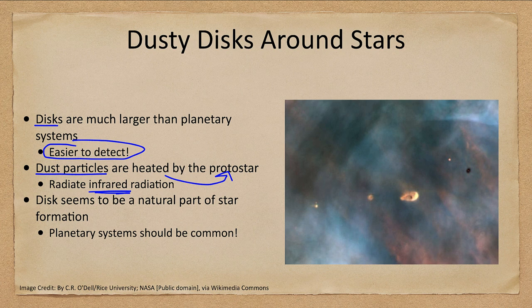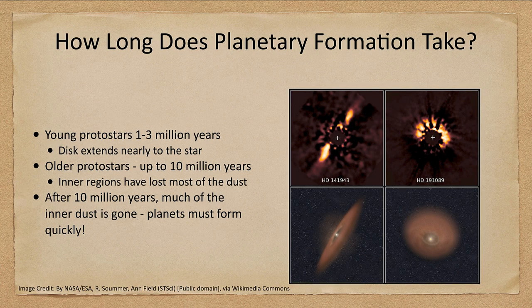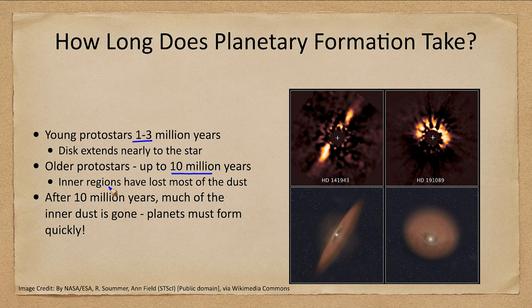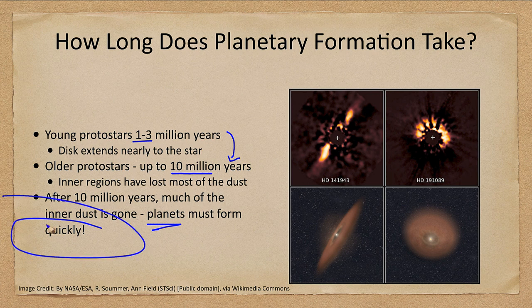However, actually detecting the planets is a little bit harder. When we look at some of these disks in very young protostars at 1 to 3 million years, the disk extends nearly down to the star itself. In older protostars, maybe 10 million years, the inner regions have been cleared of their dust. So in just a few million years that dust is gone, and that means the planets had to form very fast. They've got to form quickly in order to account for the fact that it only takes a few million years for the stars to get rid of the dust which is needed to build those planets.